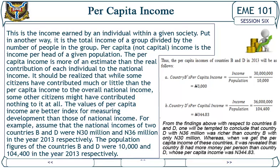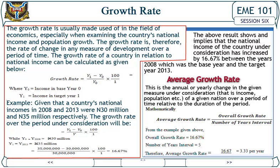For example, assume that the national incomes of two countries B and D were 30 million and 36 million naira in the year 2013 respectively, and their population figures were 10,000 and 104,400 respectively. The per capita incomes of countries B and D in 2013 can then be calculated. From these findings, one would be tempted to conclude that country D with 36 million was richer than country B with 30 million. However, when per capita income is calculated, it is revealed that country B had more money per person than country D, whose per capita income was 344.83 naira.